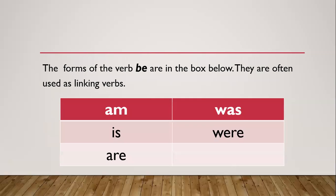The forms of the verb 'be' are in the box below. They are often used as linking verbs. So the linking verbs we're going to be using are: am, is, are, was, and were. So far, those are the linking verbs we're going to be using.